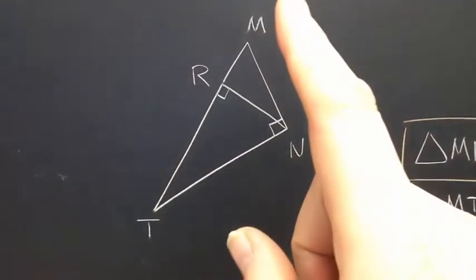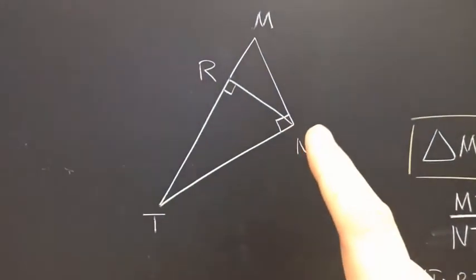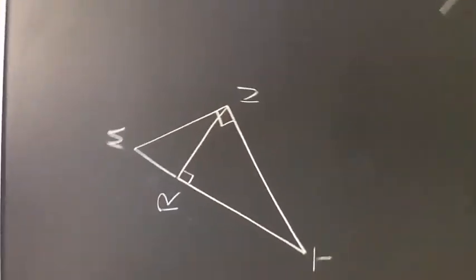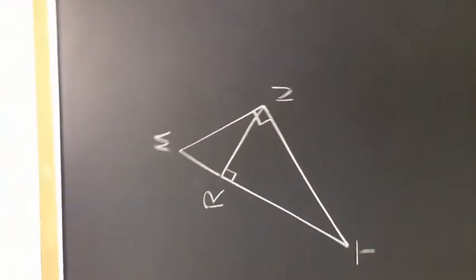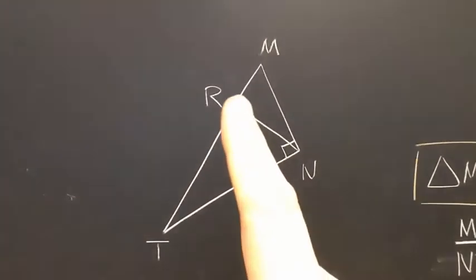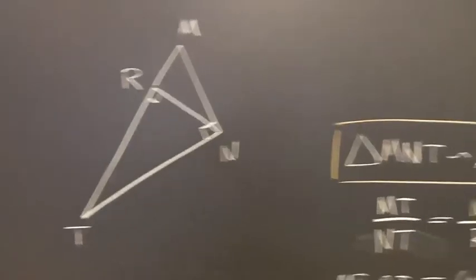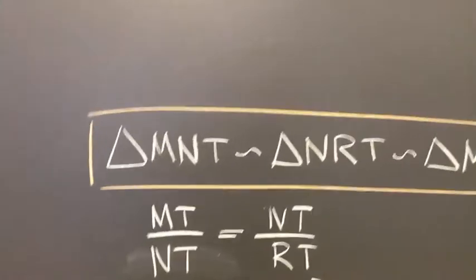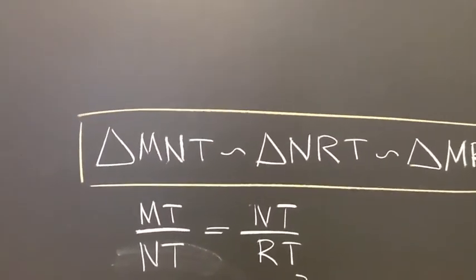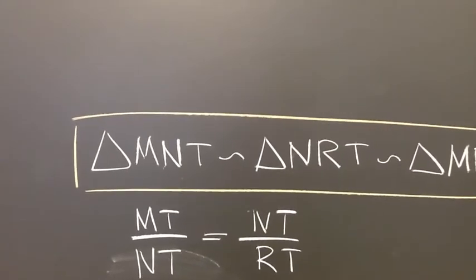But letter ordering is very important here, so which is it? Well, remember we traveled from M to N and then across the middle leg. So we want to start at N and go down to R. So we're going to do, starting at N, N-R-T. And so now we can say that triangle MNT is similar to triangle NRT, following that same direction.